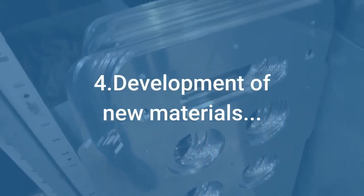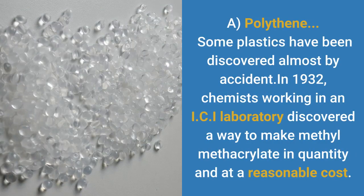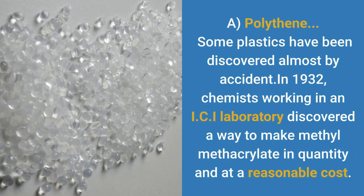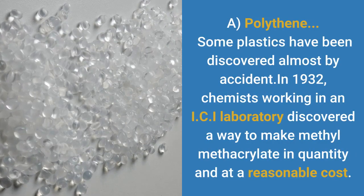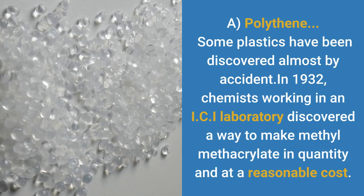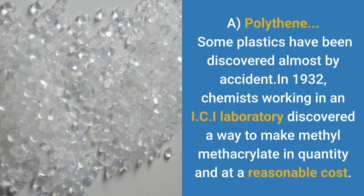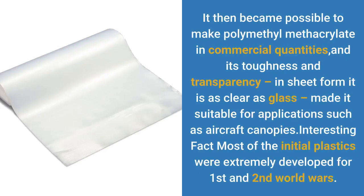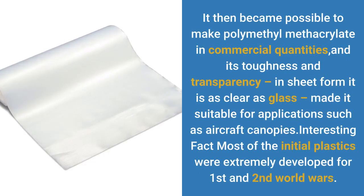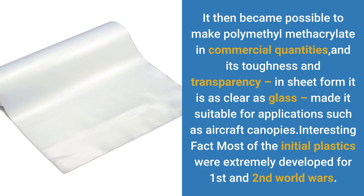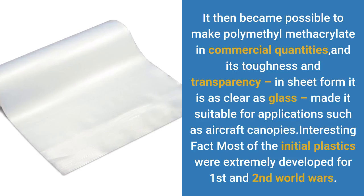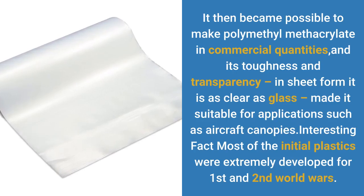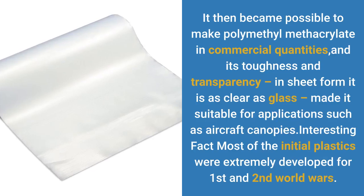Development of new materials. Some plastics have been discovered almost by accident. In 1932, chemists working in an ICI laboratory discovered a way to make methyl methacrylate in quantity and at a reasonable cost. It then became possible to make polymethyl methacrylate in commercial quantities, and its toughness and transparency — in sheet form it is as clear as glass — made it suitable for applications such as aircraft canopies. Interestingly, most of the initial plastics were developed for the First and Second World Wars.